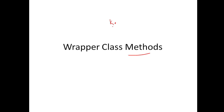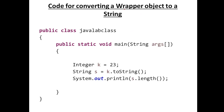Now let's look at wrapper class methods. Most of my examples focus on the Integer class. For converting a wrapper object to a string: if 'Integer k = 23', you call 'k.toString()'. This converts the integer value to a string. If this result is assigned to a String variable, you can then check its length, which would be 2.